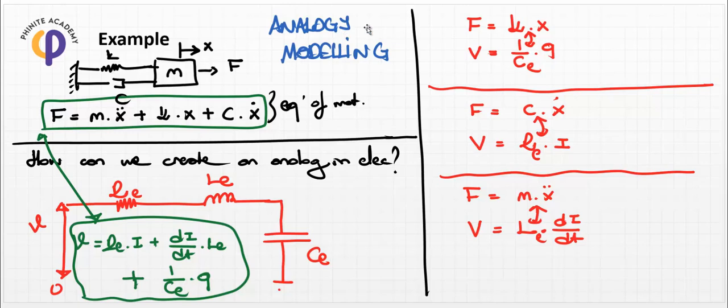Hello guys. In this lesson we are going to focus on the parameter determination of the mass, damping ratio, and spring factor of the system dynamics parameters. At the previous lesson, we created the analogy modeling example, which is the basis of the mass-spring-damping system that can be converted into the electrical analogical model.